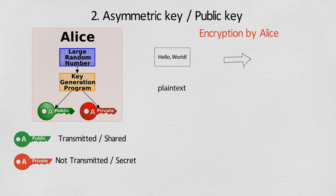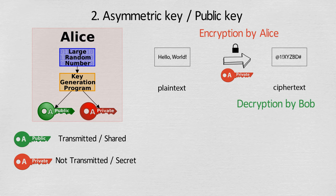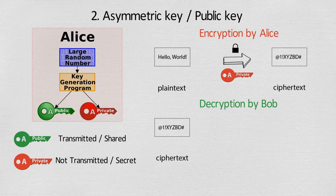Alice uses her private key to encrypt the message and shares her public key with the recipient Bob. Bob, using Alice's public key, is then able to retrieve and read the message.